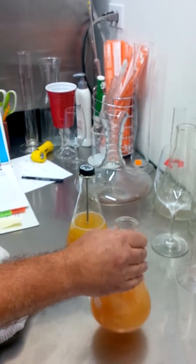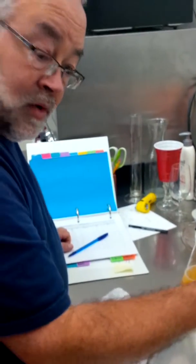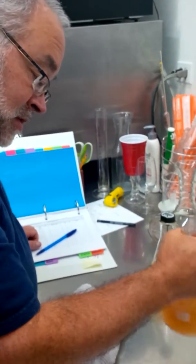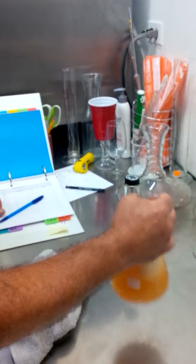So then what we do... There's still carbon dioxide in here. And the carbon dioxide will float the hydrometer up in the tube. So what I'm trying to do is get rid of some of the carbon dioxide.